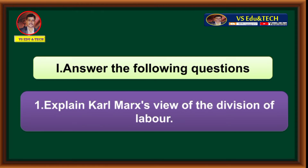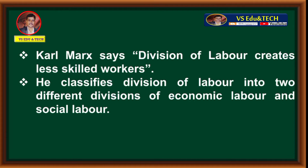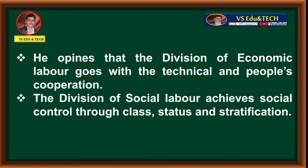Question one: Explain Karl Marx's view of the division of labor. Karl Marx says division of labor creates less skilled workers. He classifies division of labor into two types: economic labor and social labor. He opines that the division of economic labor goes with technical cooperation among people. The division of social labor achieves social control through class, status, and stratification.